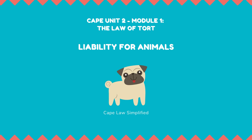Liability for cattle trespass: at common law, where cattle are either intentionally driven onto the claimant's land, the owner or person in whose possession they are is strictly liable for all damage done by them. At common law, the definition of cattle includes cows and bulls, but also horses, donkeys, sheep, pigs, goats, and sometimes even poultry. Damages under cattle trespass are recoverable not only for harm caused to the claimant's land and crops, but also for injured animals and chattels, and for any injuries inflicted on the claimant himself.